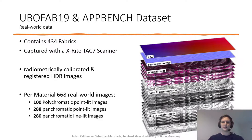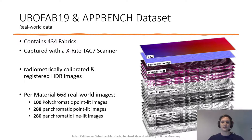The real-world data of the dataset contains 434 unique fabrics, all captured with a X-Y-TEC7 scanner, capturing radiometrically calibrated and registered HDR images. For every single material, there are 668 real-world images, with 100 polychromatic and 568 panchromatic images. The panchromatic ones are divided into point-lit and line-lit images, and only point-lit images are available for the polychromatic images.